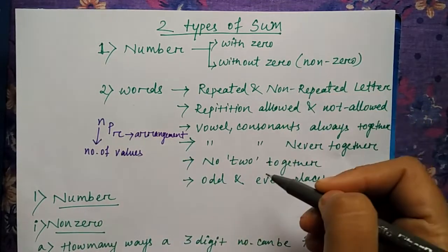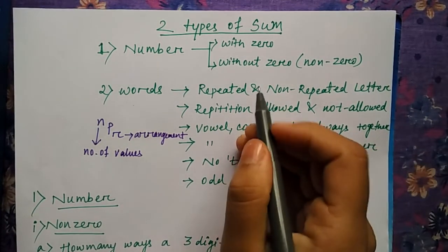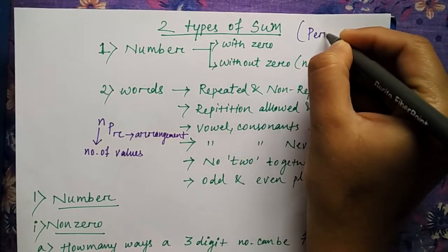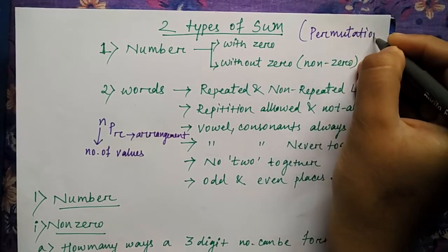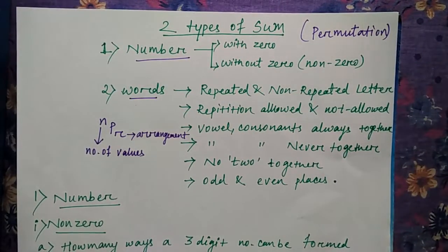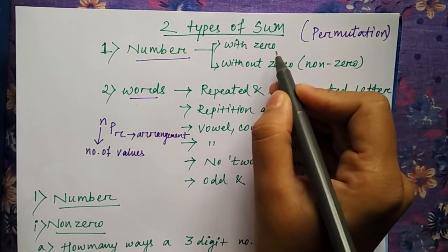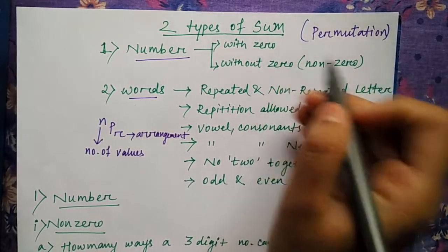So we'll go through it. The types of sum in permutation are divided into two types: one is according to the number, and one is according to the word. According to the number, in one case it's with zero or the number which starts or includes zero, and the other one is without zero, that is non-zero number.